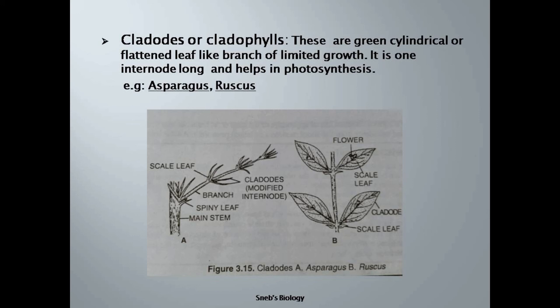Another modification is cladodes or cladophylls. Cladodes are green, cylindrical or flattened, leaf-like branches of limited growth; they help in photosynthesis and are only one internode long. For example, Asparagus, Ruscus, etc. Here, the main stem bears branches on which scaly leaves are present, and from the axils of scaly leaves arises another branch that becomes thick, fleshy, and green — one internode long. So these are modified stems.